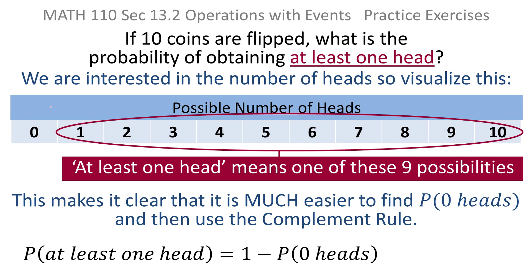In other words, the probability of at least one head is one minus the probability of zero heads. So all we have to do is find the probability that you don't get any heads, plug it in here and get one minus that, and we'll be done.